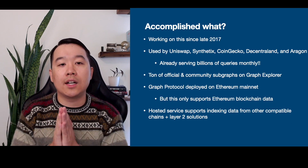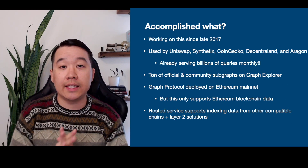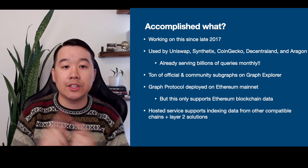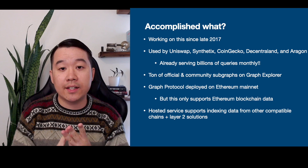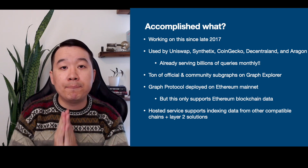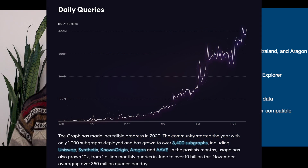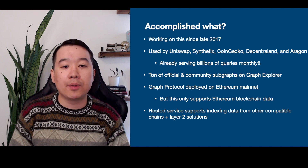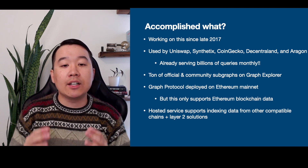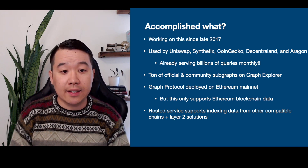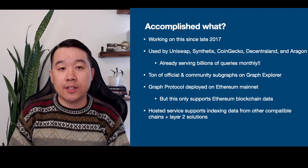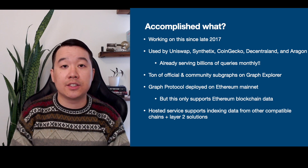What have they accomplished so far? They've been working on this since late 2017 and have already been used by big-name services like Uniswap, Synthetix, CoinGecko, Decentraland, and more. They're already serving billions of queries monthly and have a ton of official and community subgraphs on the Graph Explorer. The Graph Protocol has been deployed on Ethereum mainnet, though this only supports Ethereum blockchain data. They also have a hosted service supporting indexing from other compatible chains and Layer 2 solutions.